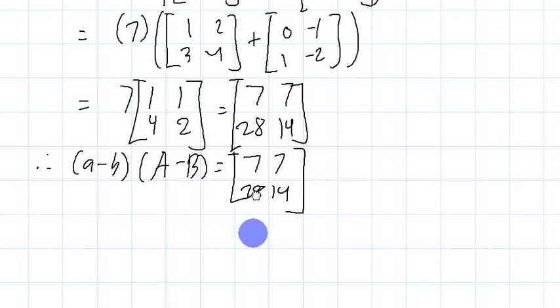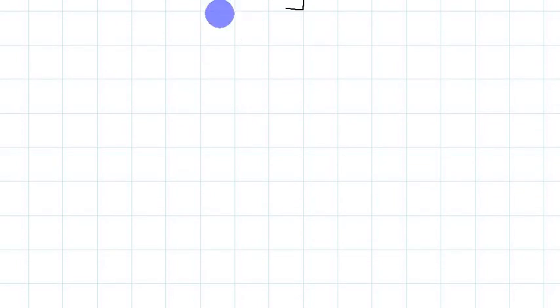For number 3, we are asked to find the matrix AB times matrix O. Remember, that matrix O is actually a zero matrix. Any scalar that we multiply to the zero matrix will just result to the zero matrix. Therefore, it is safe to say that even without showing a calculation, this is just equal to the zero matrix. And those are some examples of performing matrix operations, being mindful of their properties.